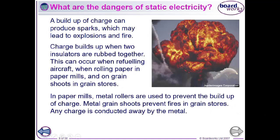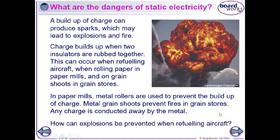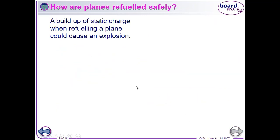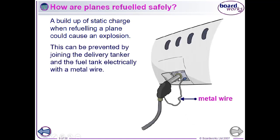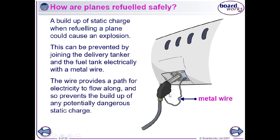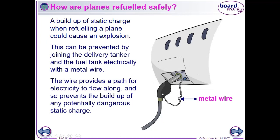In paper mills, metal rollers are used to stop charge building up. Metal grain chutes when moving grain from one place to another help prevent fires in grain stores because the metal chute conducts away any built-up charge. To prevent explosion when refuelling aircraft — since aircraft fuel is very volatile and any spark could cause an explosion — a metal wire attaches from the nozzle and hose to the tanker or the aircraft's tank. This metal wire provides a path for electricity to flow along, preventing the build-up of electrons on either the aircraft or the hose. It discharges continuously so there's no build-up of charge and no sparks are produced.